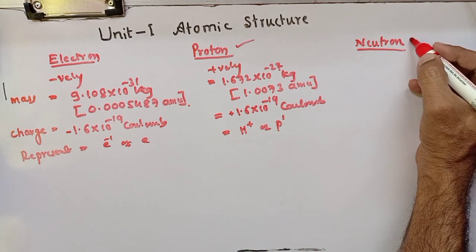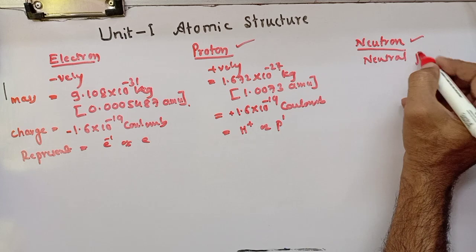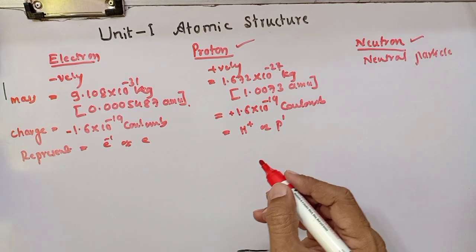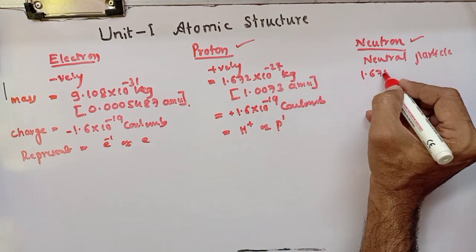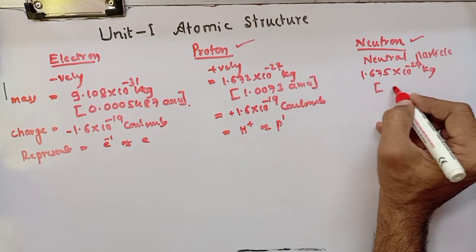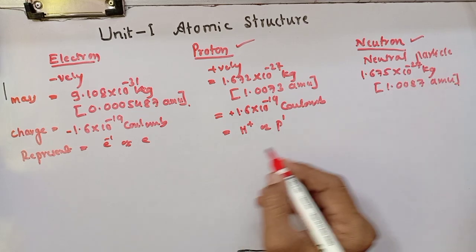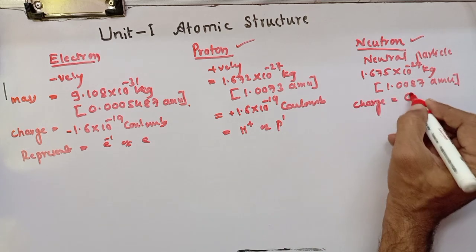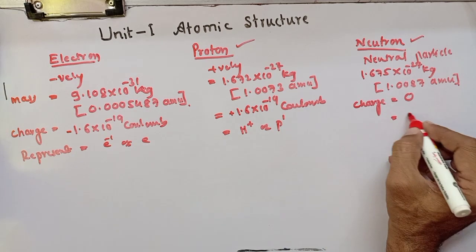If you consider the neutron, neutrons are neutral particles present in the nucleus. The mass of neutron is 1.675×10⁻²⁷ kg or 1.0087 atomic mass unit. The charge is equal to zero — that means these are neutral particles and hence do not carry any charge. It is represented as n.